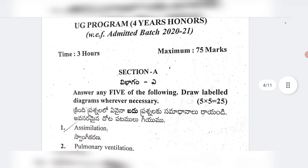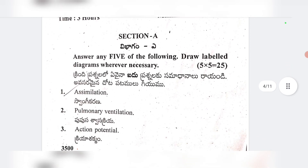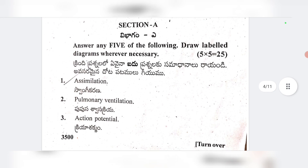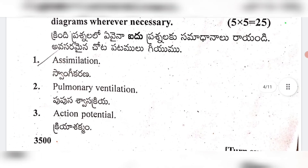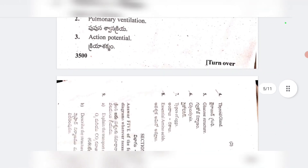First short answer: assimilation. Second: pulmonary ventilation. Third: action potential. Telugu medium students can also follow. Please turn your screen slightly. Short answer topics also include: thyroid gland, glucose structure, glycolysis, types of eggs, and essential amino acids.